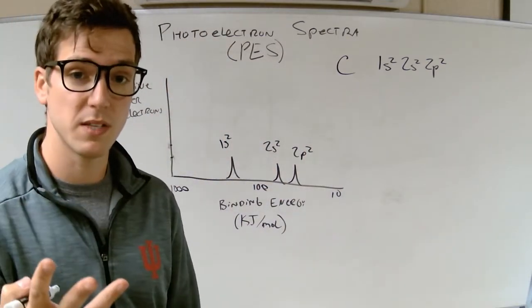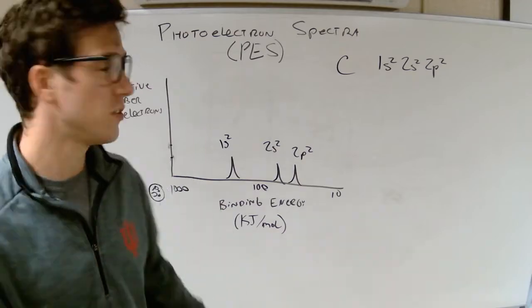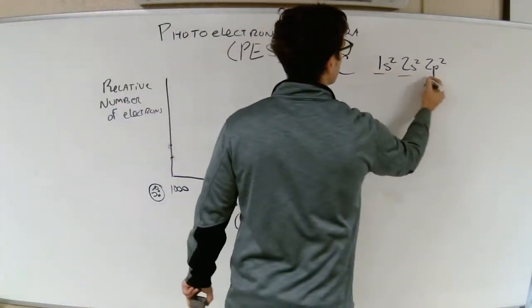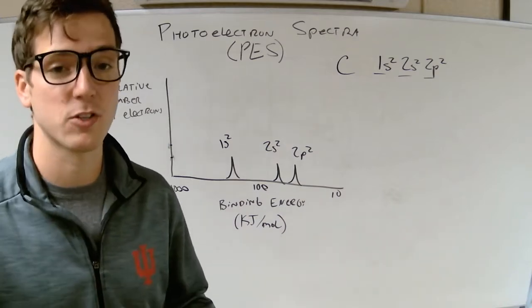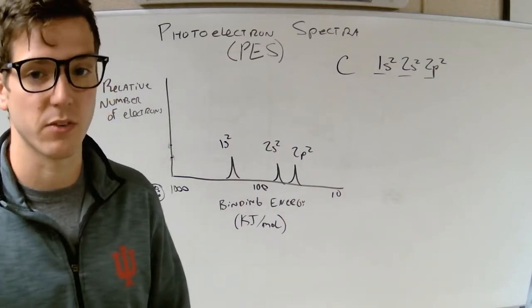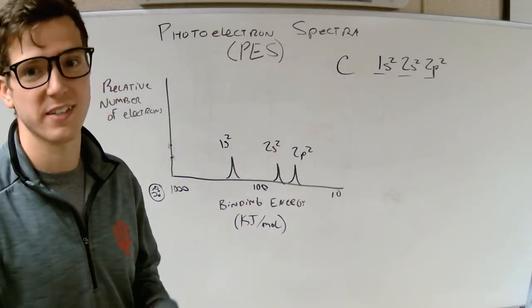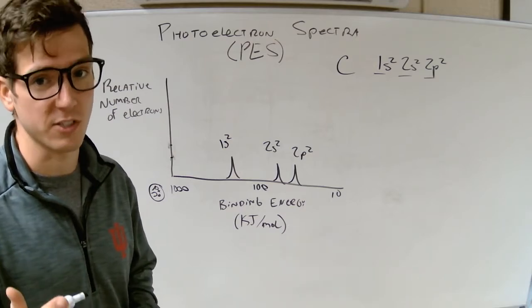You'll have a 2s2 peak later on, and then you will have a 2p2 peak. So, this is 1s2, this is 2s2, and this is 2p2. You got three peaks, each one for one of those configurations, 1s2, 2s2, 2p2. And, depending on how many electrons there are, is how high the peak is. These are all very short peaks, because they only have 2 electrons each.